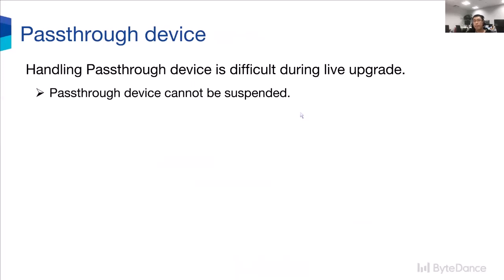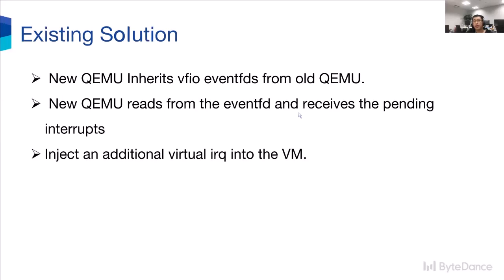For the pass-through device, how do we ensure interrupts are not lost during the Live Upgrade? This is difficult because the pass-through device is not suspended. For this reason, pass-through device interrupts can occur at any time, so we cannot completely copy the pass-through device interrupt state from the old QEMU to the new QEMU during the Live Upgrade. There is an existing solution: injecting an additional virtual IRQ. First, the new QEMU inherits VFIO EventFDs from the old QEMU. Second, the new QEMU reads from EventFD and receives pending interrupts. Finally, it injects an additional virtual IRQ into the VM after handing over the device.